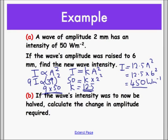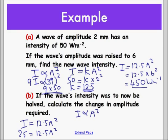If the wave's intensity was to now be halved, calculate the change in amplitude required. We can use our formula: I equals 12.5 a squared. The intensity was now going to be 25, then we solve for a squared. However, if you do it logically, intensity is proportional to a squared. If I want to get half I, what must we multiply a by and then square it to get a half? If I multiply it by 1 over square root of 2 and then square that, I get a half, gets rid of that square root. Just be aware of that one.